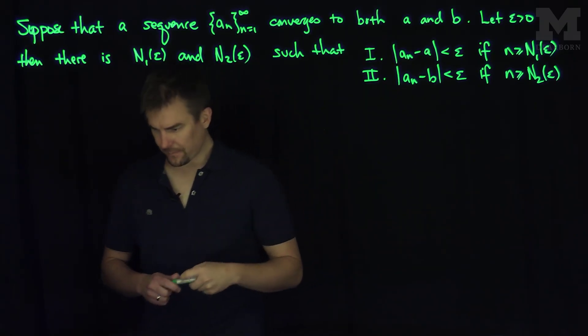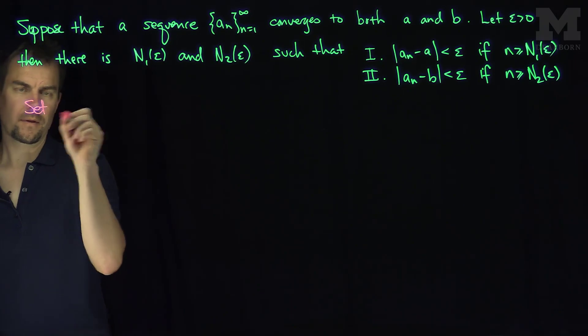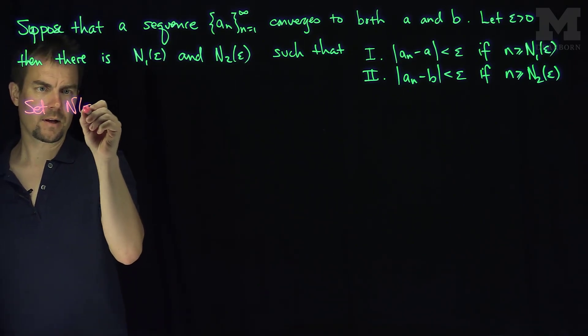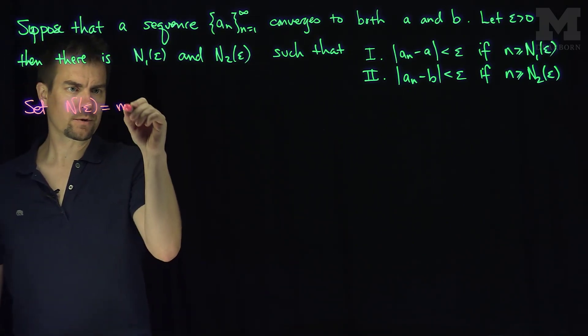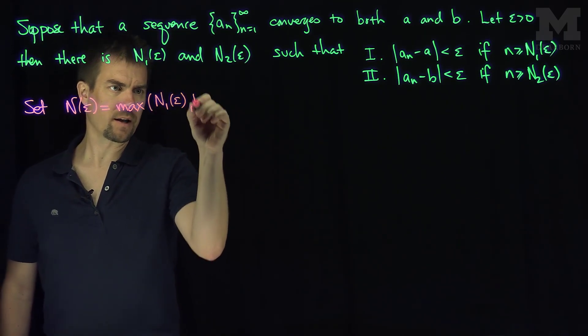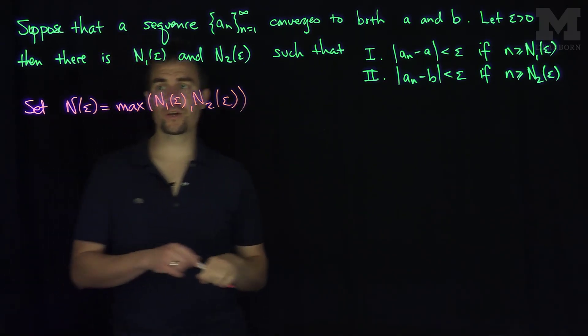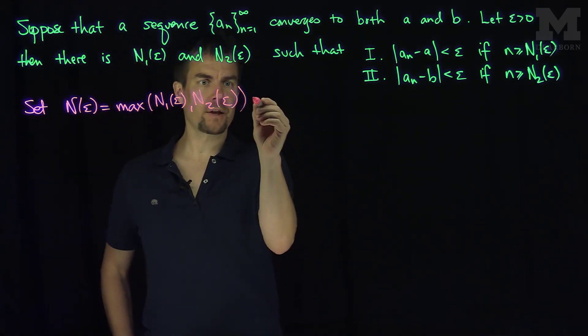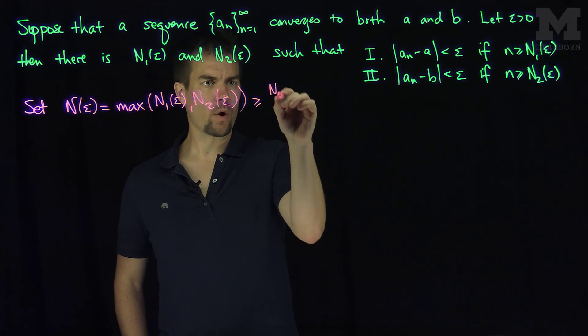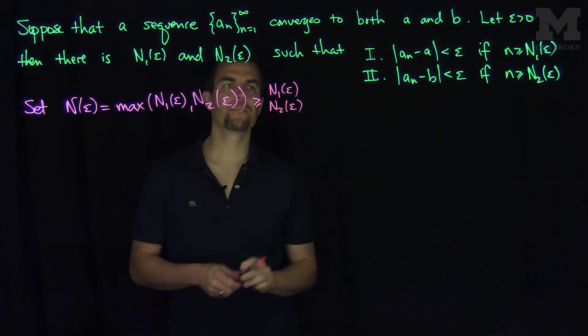Now what I'll do is the following. I will set N(ε) to be the maximum of N1(ε) and N2(ε). So in particular, we can note that N(ε) is bigger than or equal to both N1(ε) and N2(ε).